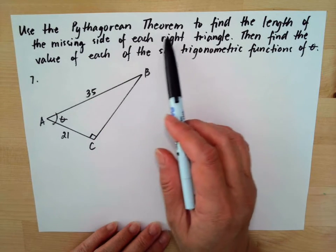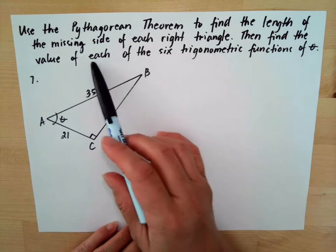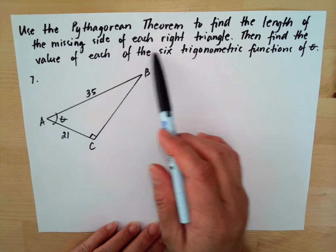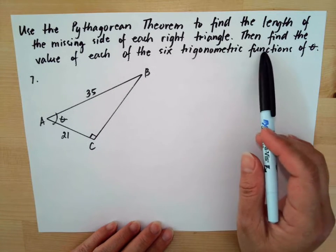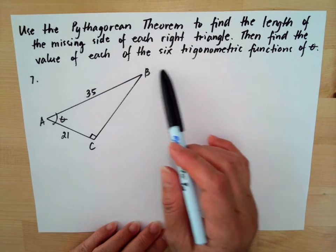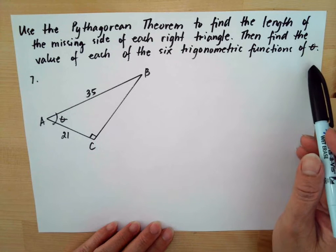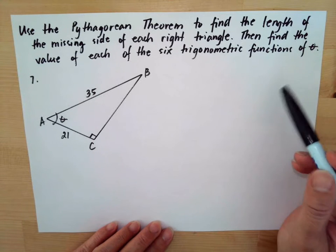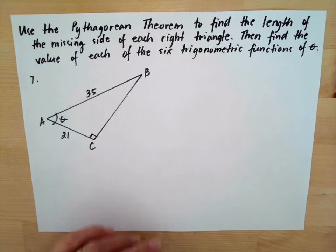Use the Pythagorean theorem to find the length of the missing side of each right triangle, then find the value of each of the six trigonometric functions of angle theta.